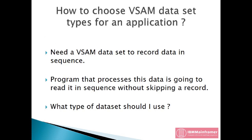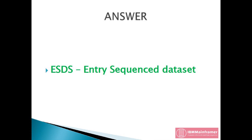Let us see an example of how to choose a VSAM dataset type for an application. Let's say I need a VSAM dataset to record data in sequence, and the program that processes this data is going to read it in sequence without skipping around. What type of dataset should I be looking into? The answer is an ESDS, or Entry Sequence Dataset. Because members go in based on when they're recorded, and we have no need to reference individual records by name or relative number, we can make efficient use of an ESDS here. If you also selected ESDS — you are great. You understood the VSAM concepts well.